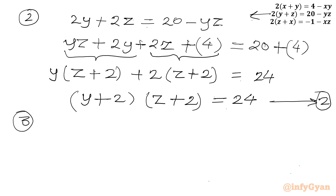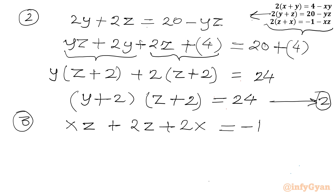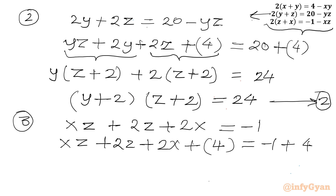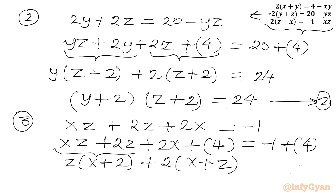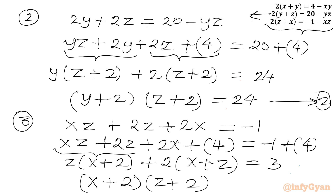Now let us consider the third equation: 2(z+x) = minus 1 minus xz. I bring xz to the left, so xz plus 2z plus 2x equals negative 1, then add 4 to both sides. From the first two terms I take z common giving (x+2), and from the other two terms I take 2 common, also giving (x+2). The right hand side becomes 3, so (x+2)(z+2) = 3. This is equation number 3.